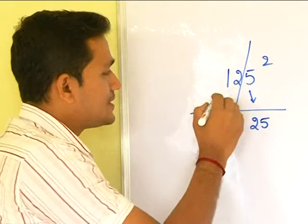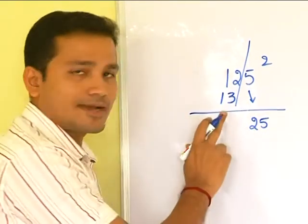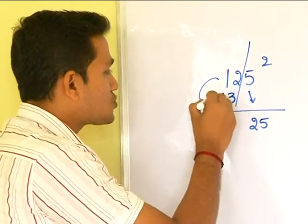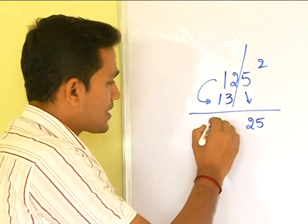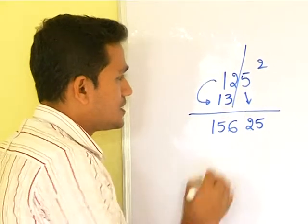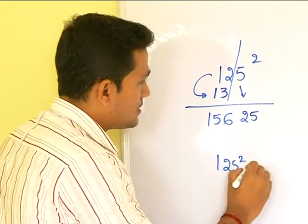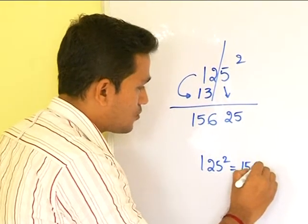You have 12 now. Take the next higher digit which becomes 13 and multiply these two digits. 12 into 13 then it gets 156. So, 125 square is 15625.